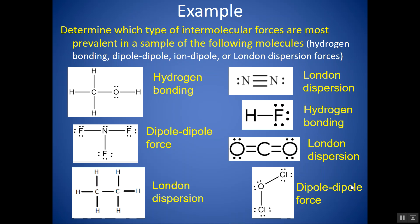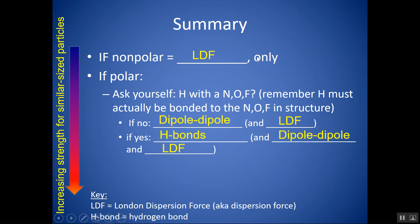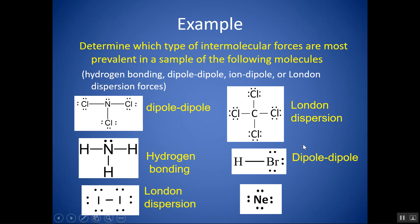So you're really coming back to that summary: if nonpolar, London dispersion; if polar, ask yourself does it have H with an N, O, or F? If no, dipole-dipole. If yes, hydrogen bonds. And if they ask for a list of all types — not just the most prevalent, but all types of IMFs — make sure you also include LDFs with all options, since they're present in all molecules. For hydrogen bonding, since it's a type of dipole-dipole, it also includes dipole-dipole.